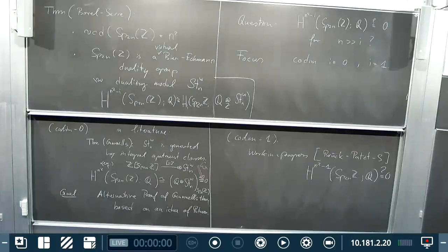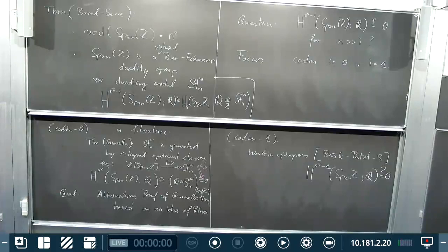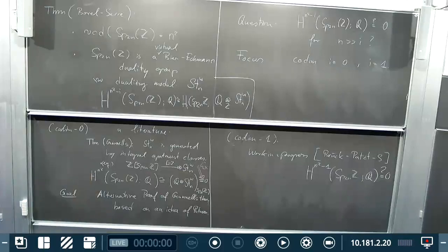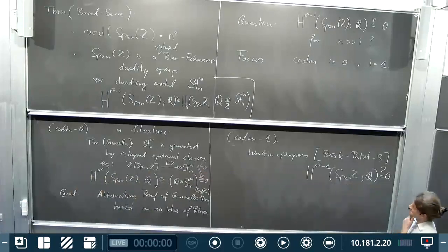Regarding the question about the virtual cohomological dimension: I think it is n squared plus n, not n squared. Let me correct my statement — I believe it is n squared plus n, because it's related to the rank. Sorry for the error.